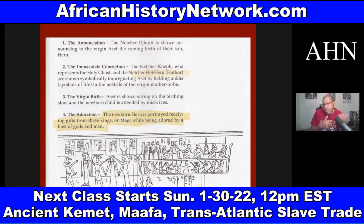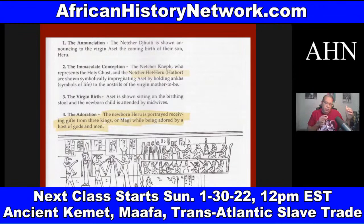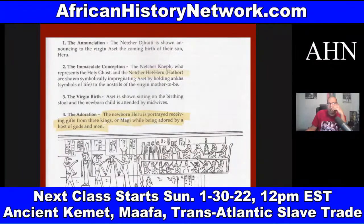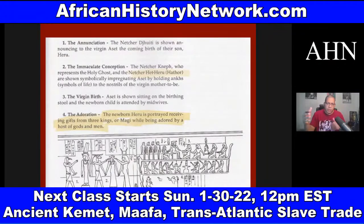For the adoration, the newborn Heru is portrayed receiving gifts from the three kings — or Magi. The Bible doesn't say how many Magi there were, but 'three kings' also references the three stars in Orion's Belt. The star Sirius is in the constellation Canis Major — the Big Dog — also known as the Dog Star. All of this is connected, as covered in a presentation on the winter solstice and why Christmas is celebrated on December 25th.